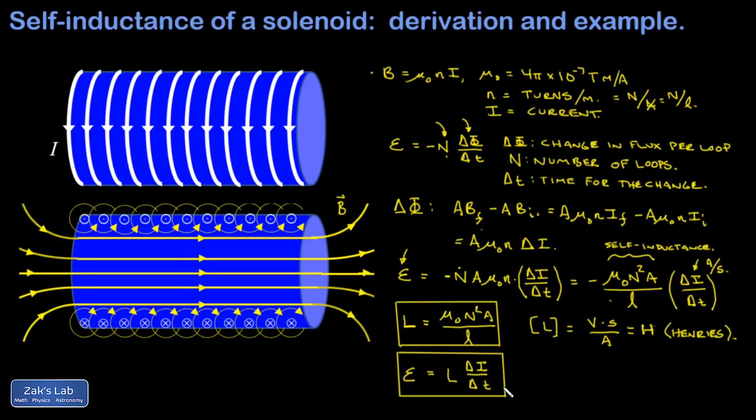A bigger L means you get a more intense induced EMF resisting the change in current. I can also see from the formula that a bigger rate of change in the current induces a larger EMF, which makes a lot of sense.